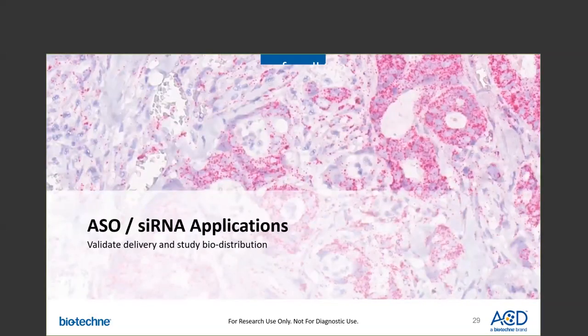Next, I'll show you some data using our new assay for the detection of ASOs and siRNAs. The detection of these small RNAs is important, as previously mentioned, for validating delivery chemistry, biodistribution, safety and toxicity, and short-term and long-term stability for your therapeutic solution.